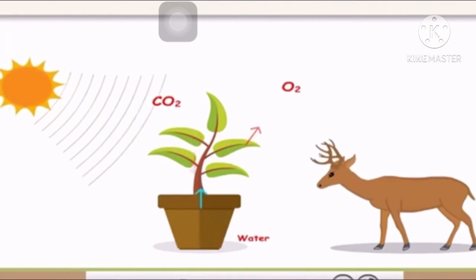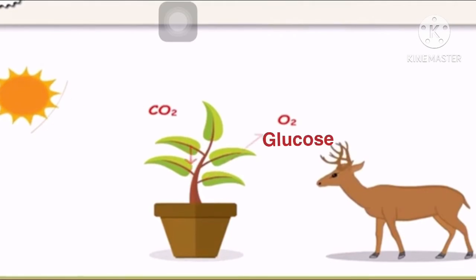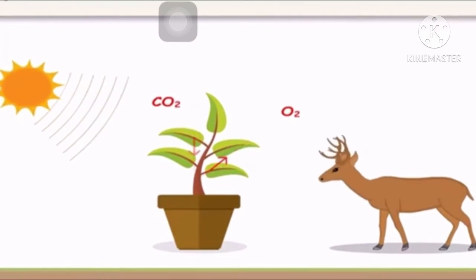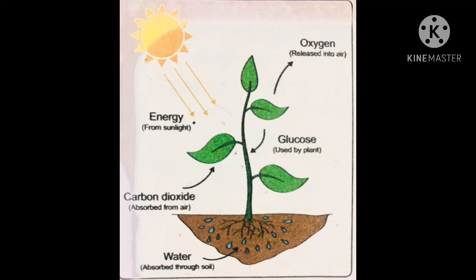Look at this diagram. Plants get energy from sunlight. They use carbon dioxide that is present in our air, and water is absorbed through the roots of the plants. Then they prepare their food and release glucose that is used by the plants again, and they also release oxygen that is used by human beings and animals. This is the process called photosynthesis.